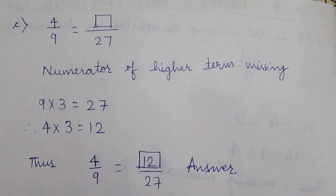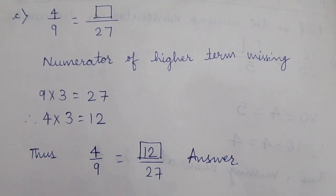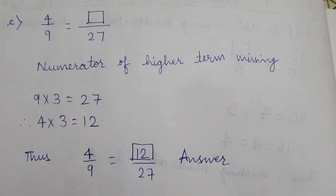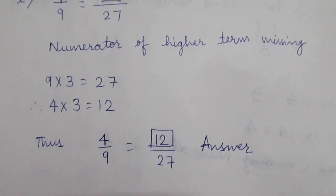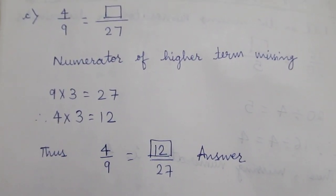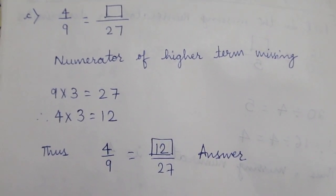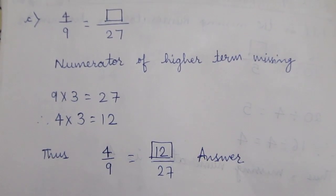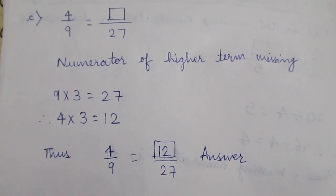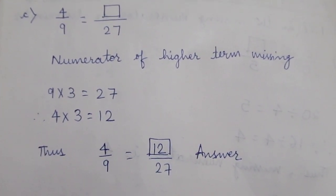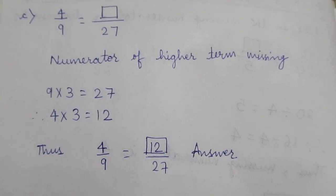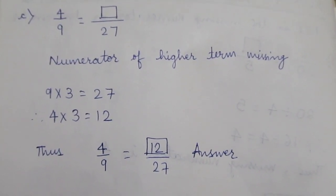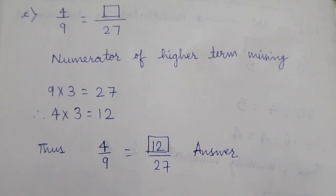Therefore we will consider the denominator first: 9 times 3 gives 27. Therefore 4 times 3 gives 12. Thus the answer is 12.